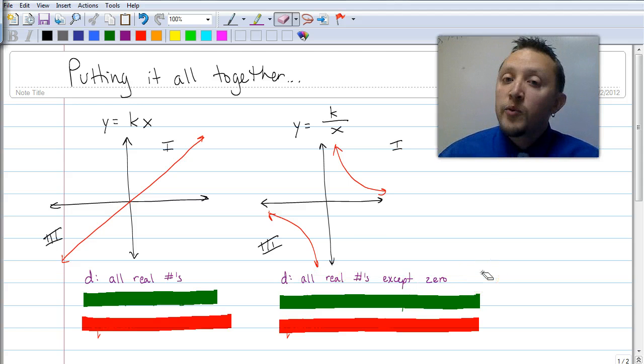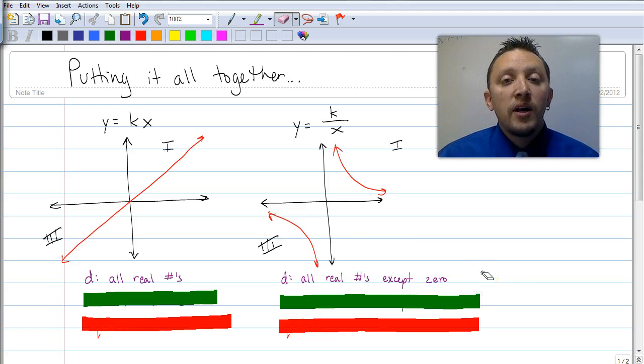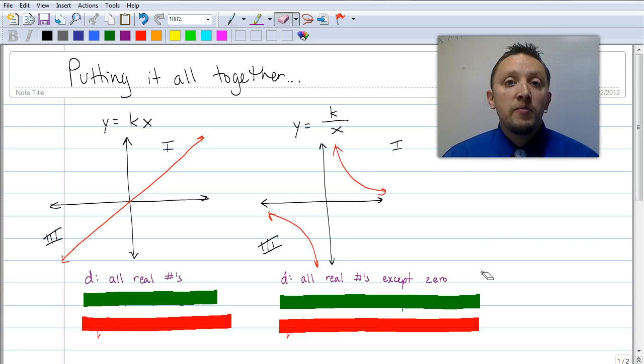Well, you should remember that in that second graph, the domain is going to be all real numbers except zero because we have that asymptote. The asymptote is that invisible line where, as you look at the graph, it goes infinitely in the positive direction and infinitely in the negative direction. But as those graphs get closer and closer to zero, they bend, meaning that they're not going to be exactly where x equals zero. So it would be all real numbers except zero is your domain.